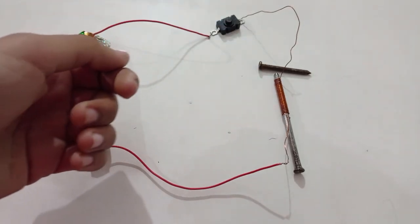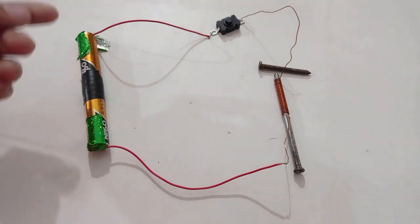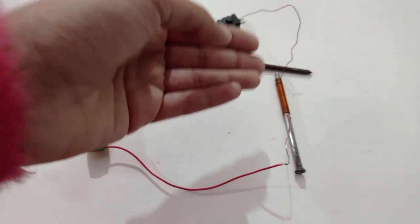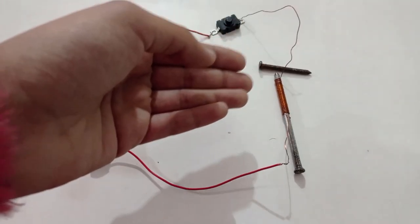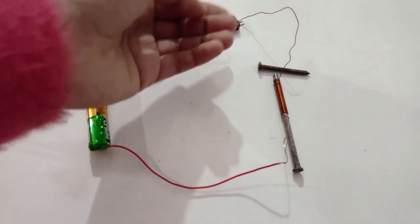Electromagnets are actually made of soft iron, which has low carbon content because it gets magnetized and demagnetized easily. Perfect for temporary magnets. Since our iron nail is not actually made of soft iron, you may notice that it still retains magnetism for some time, even after turning off the current.